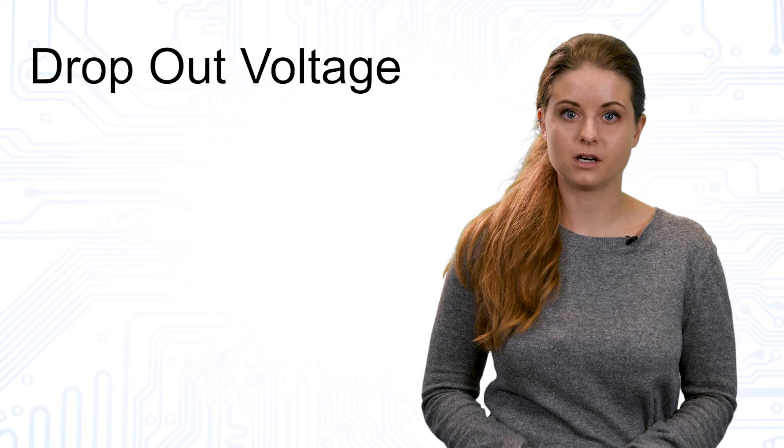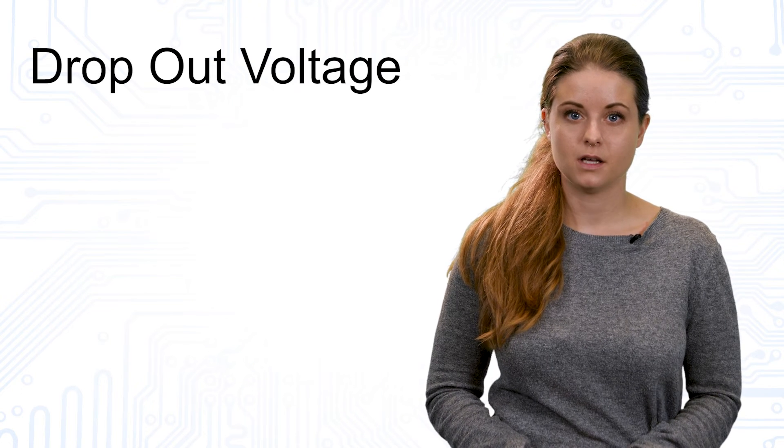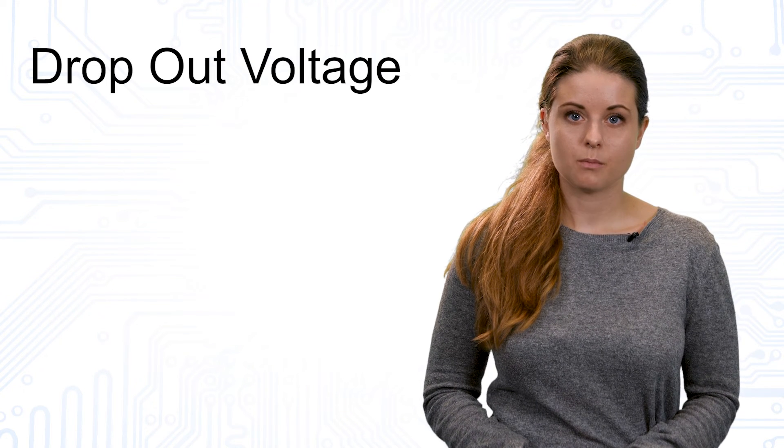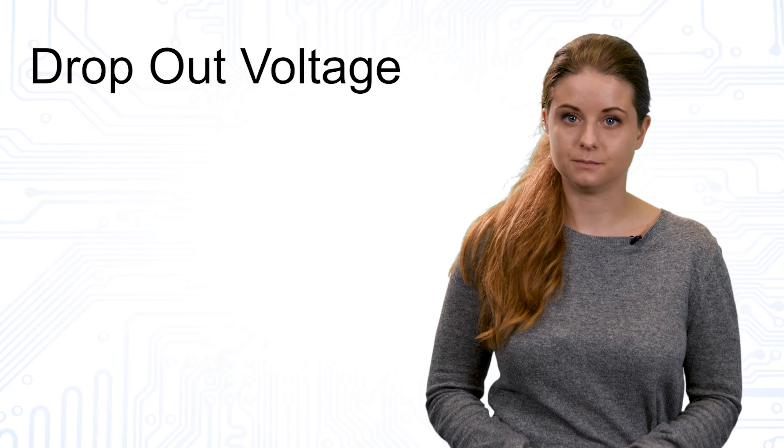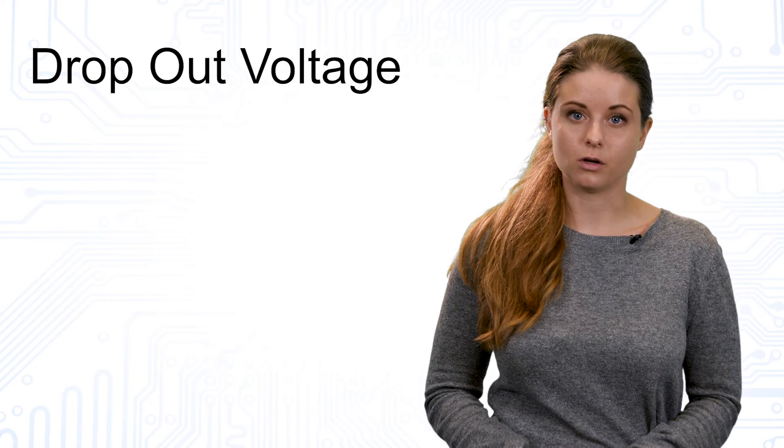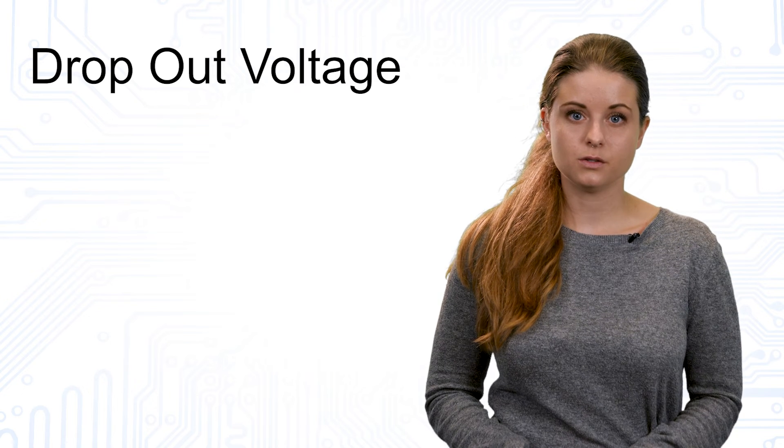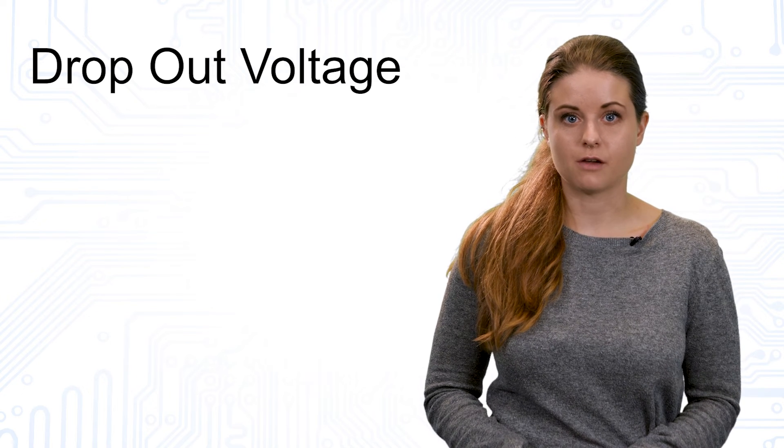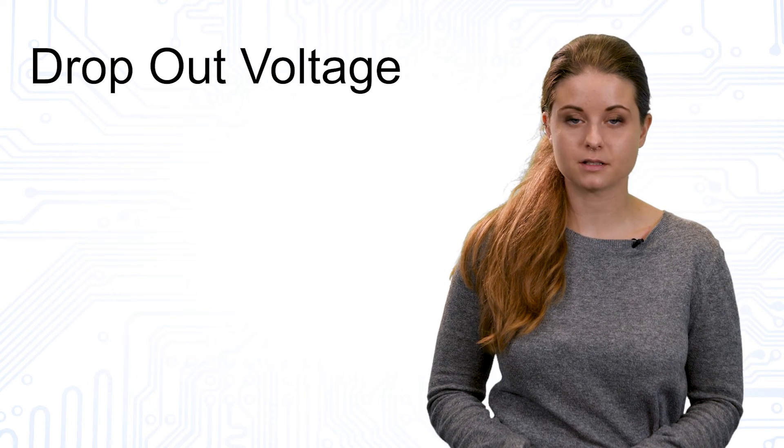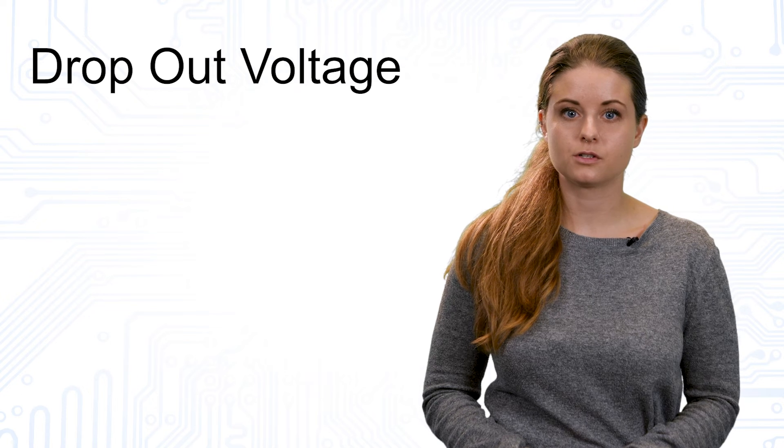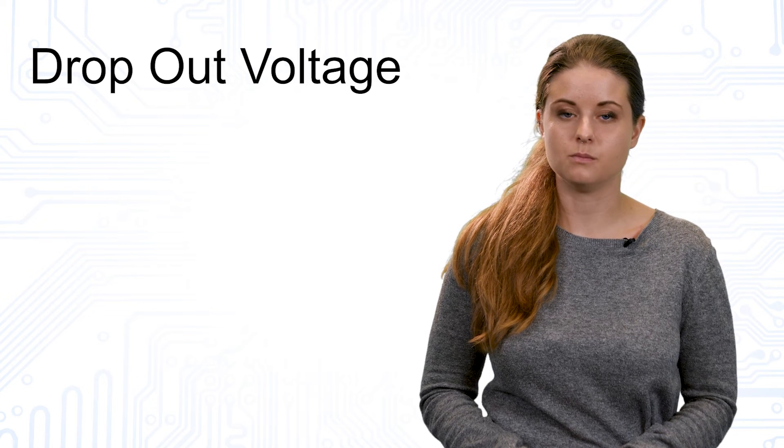The last specification we want to explain to you in this video is the dropout voltage of linear voltage regulators. As everything in nature, power supplies are not ideal. Losses occur in all of them and the efficiency is never 100%. Due to these losses, which can for example occur at a pass device, the output voltage can never be exactly the input voltage.